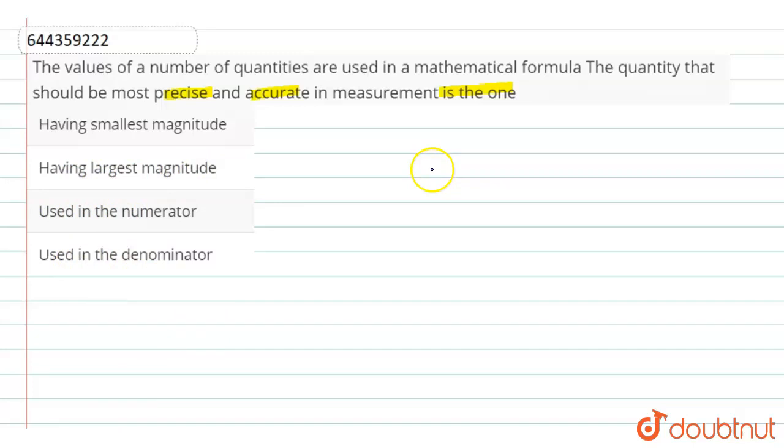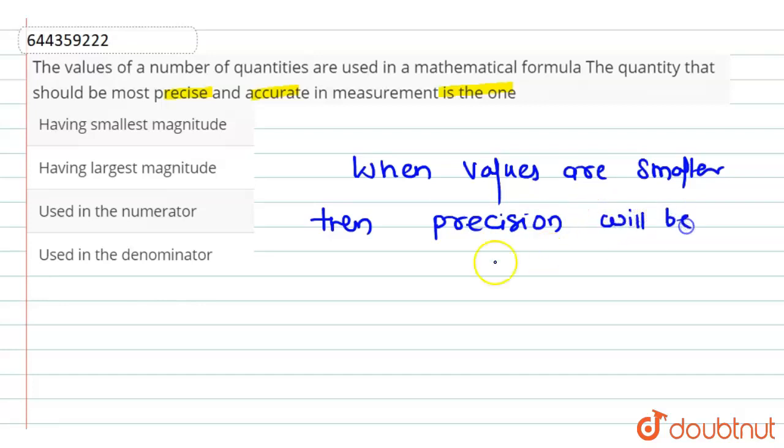We know that when the values are smaller, then precision is more. When values are smaller, then precision will be more, and relative error will be maximum.